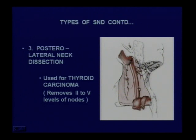Medullary carcinoma is one exception: clearance of central compartment nodes — level 6 — and if involved, level 7 nodes is also important. But for common differentiated malignancies of the thyroid, posterolateral neck dissection is sufficient.